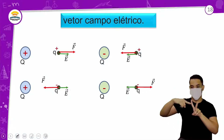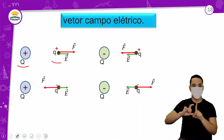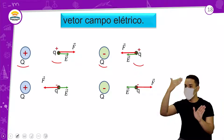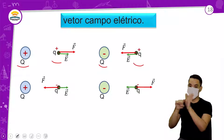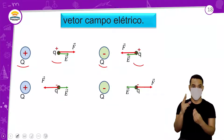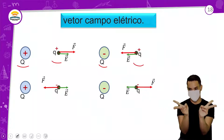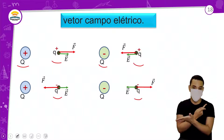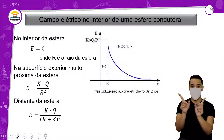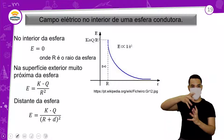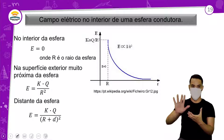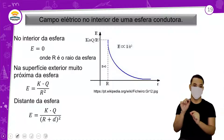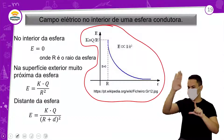Vetor campo elétrico: quando a carga geradora é positiva e a carga de prova é positiva, força e campo têm a mesma direção e sentido. Quando a carga geradora é negativa e a carga de prova é positiva, continuam tendo a mesma direção e sentido. Se a carga de prova é negativa, o campo tem direção igual mas sentido oposto ao da força. O campo no interior de uma esfera condutora se neutraliza — e atenção ao gráfico em forma de curva, isso é essencial.